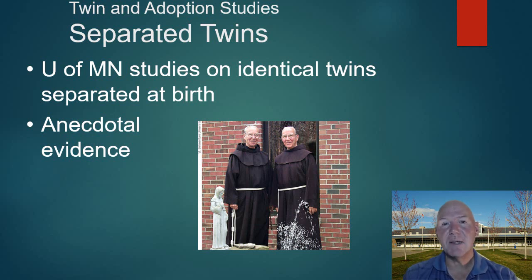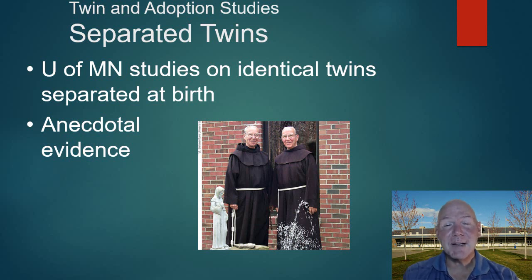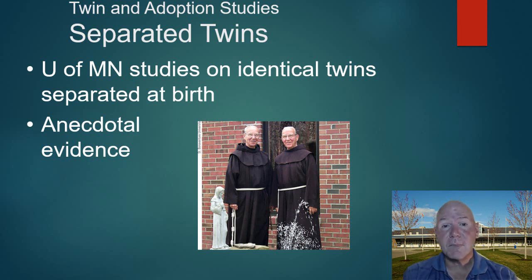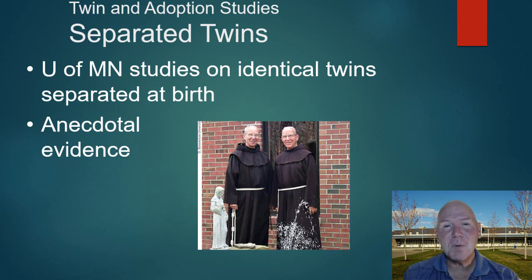The similarities found in separated twins are remarkable, even including dogs with the same name and breed. However, we can't simply conclude it's all genetic — this is anecdotal evidence, and researchers were actively looking for similarities. Genetically, humans are not very different from one another; chimps share about 98% of our genes. But a small genetic difference can make a big difference in how traits are expressed.